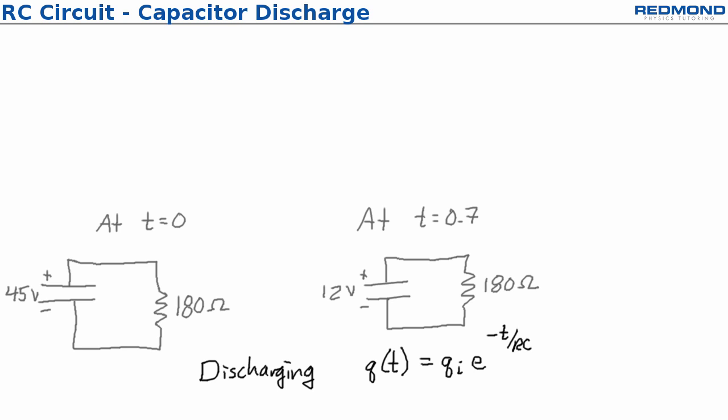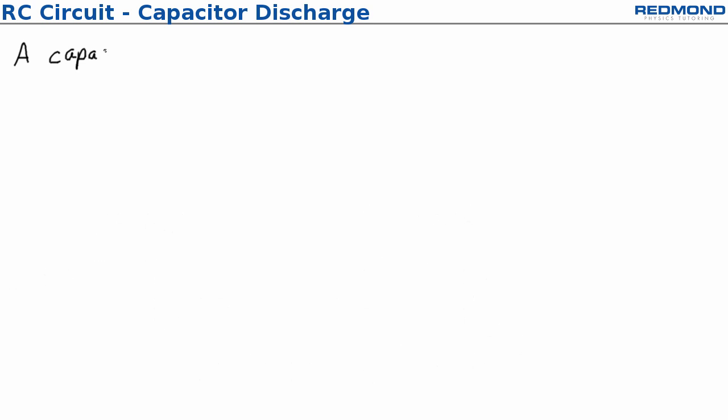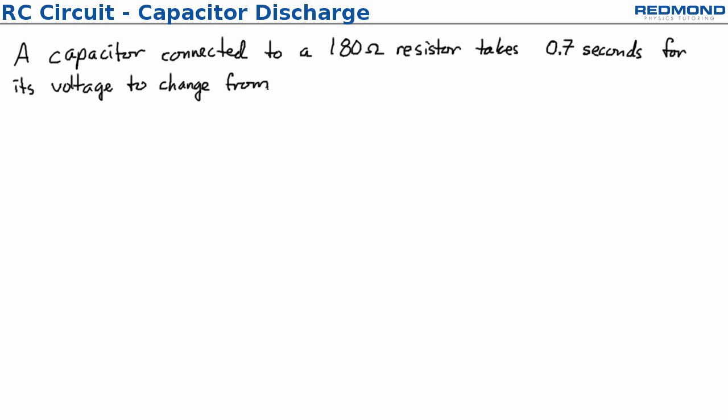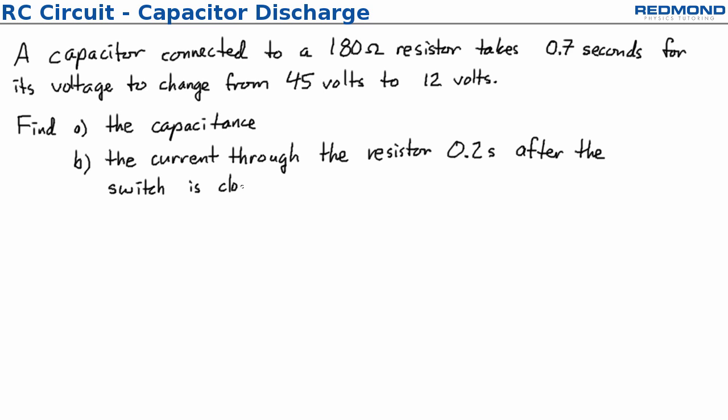The problem statement tells us that a capacitor is connected to a 180 ohm resistor and it takes 0.7 seconds for the voltage across the capacitor to change from 45 volts to 12 volts. Find first the capacitance and then the current through the resistor 0.2 seconds after the switch is closed.